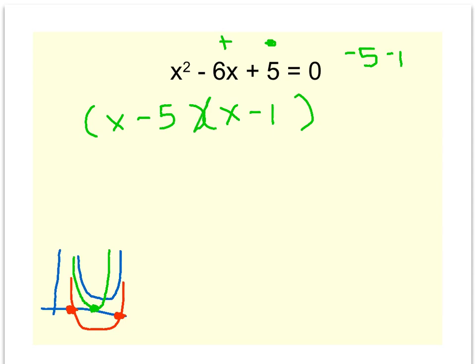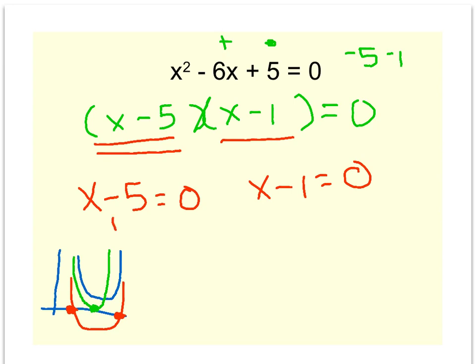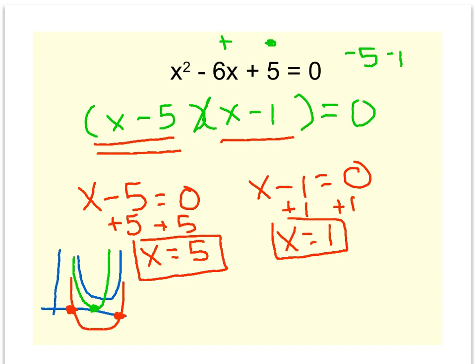Now if we were just factoring and this equals zero wasn't there, we'd be done. But it is there and we can't forget about it. So when you see the word solve, we actually have to do some algebra. Now it's time to simply take my two binomials and set them both equal to zero. Now we've got two equations to solve. When you add five and add five, you get x equals five, so that's one answer. When you add one and add one, you get x equals one, so that's your second answer.